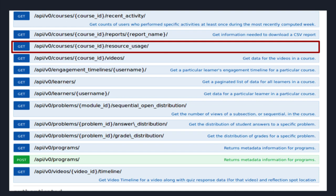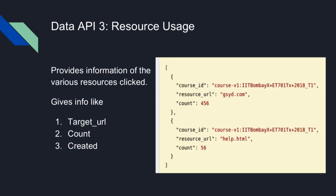The third part was to provide course-wise click counts for every target URL. The new 'resource usage' URL highlighted in the interface was completely new and not yet fully implemented due to shortage of time. The API response gives the course ID, the URL, and the count of people who visited that URL — currently using dummy data, but it can obviously be completed in the near future.